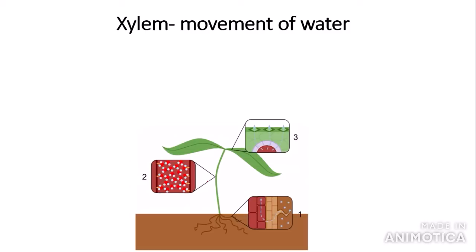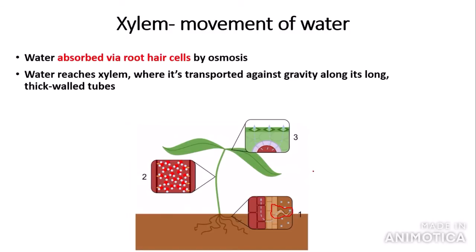The xylem is responsible for the movement of water so the plant can carry out photosynthesis. So how is water actually absorbed into the xylem from the soil? The water is absorbed by root hair cells by the process of osmosis, as the xylem has a low water potential at the start. Root hair cells are specialised cells; they have a large surface area so that they can absorb more water. The water is then transported against gravity, in one direction only, along its long thick-walled tubes.